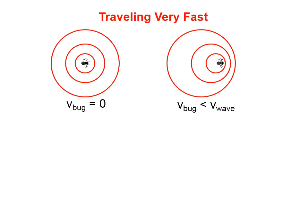This is what the wave pulse would look like if the bug is traveling slower than how the waves are traveling, because the waves are spreading out at a certain speed.